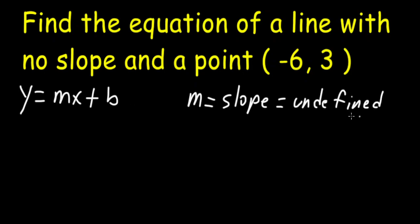When you have an undefined slope that means that the line is vertical at the x point. So we have an x point of negative 6.